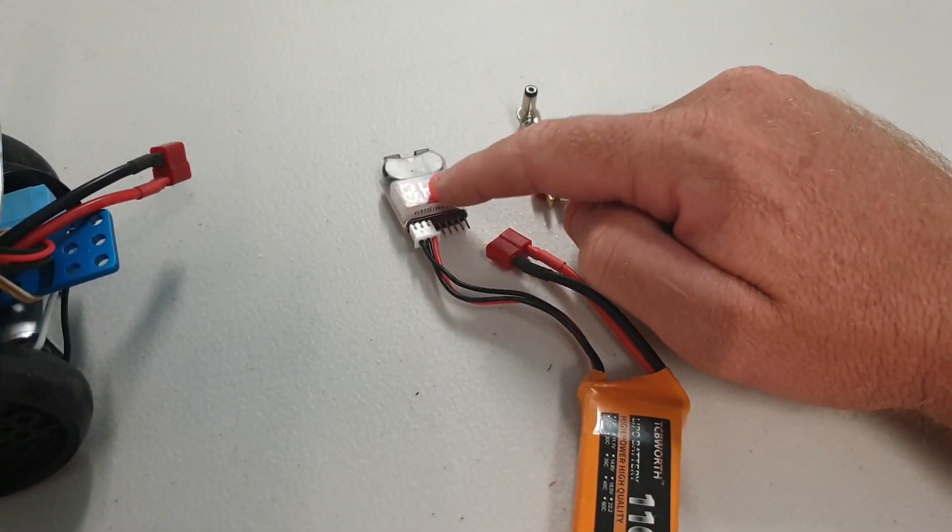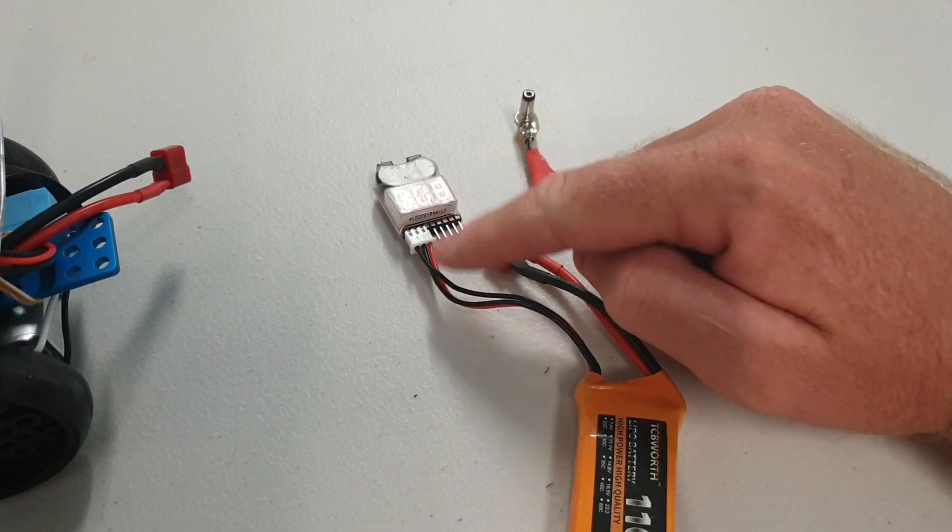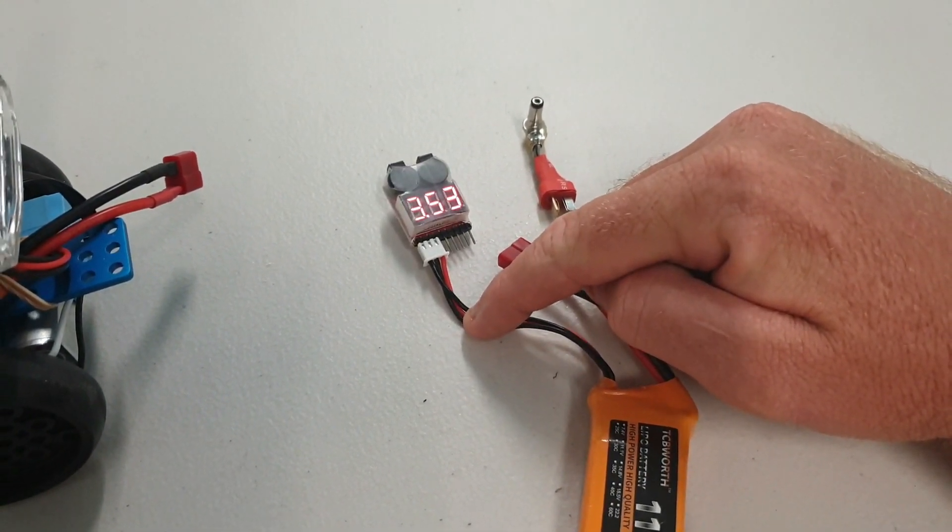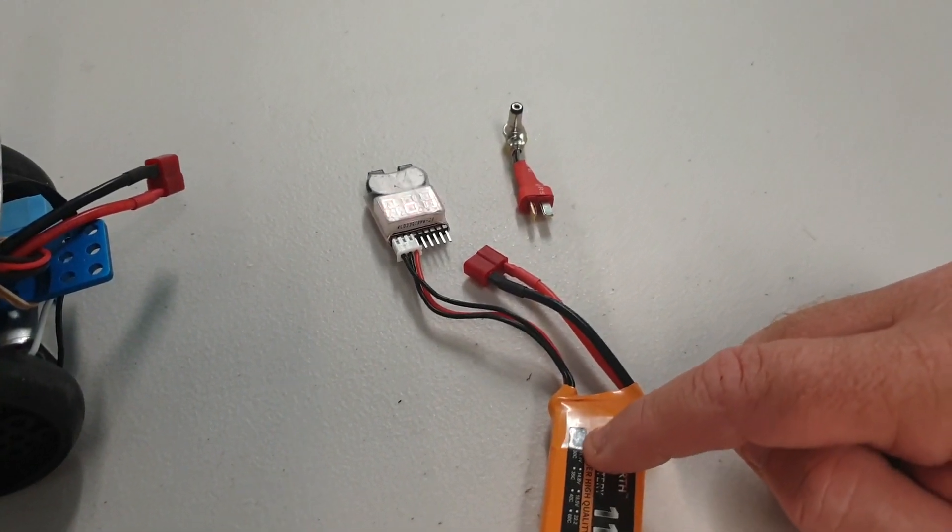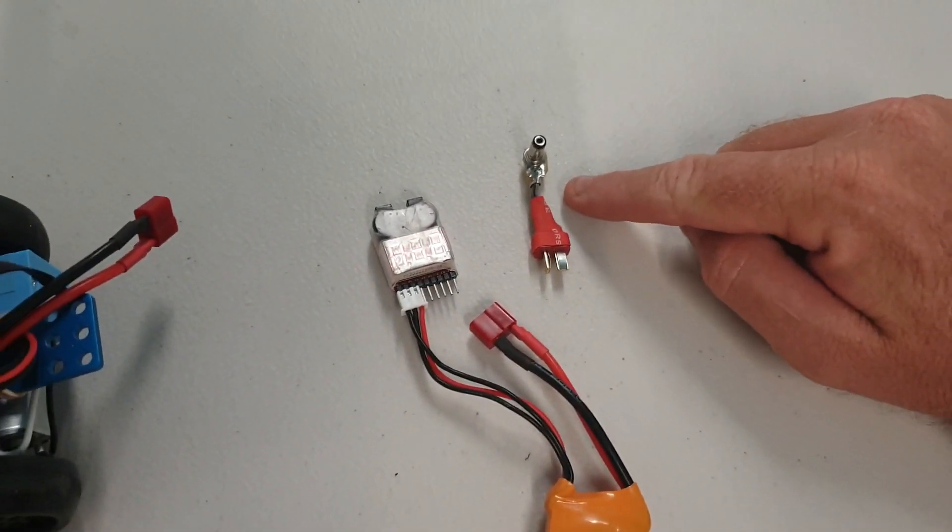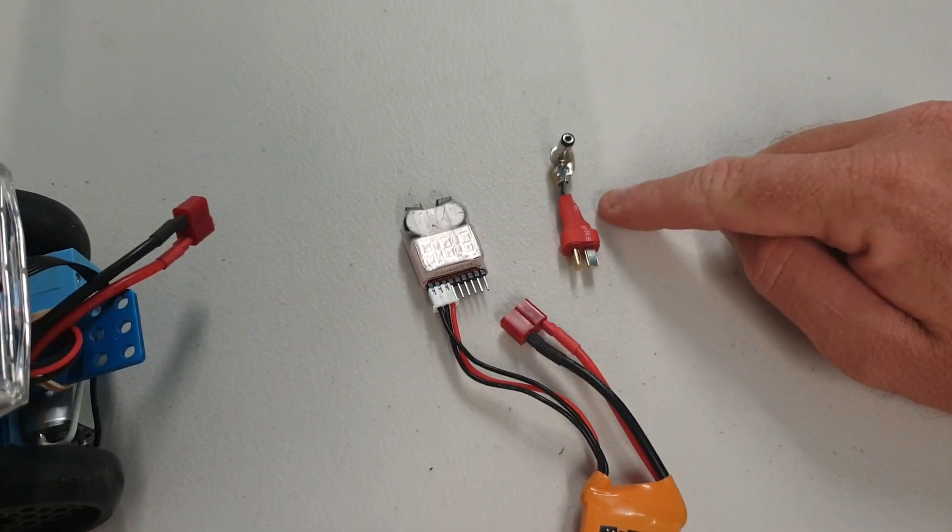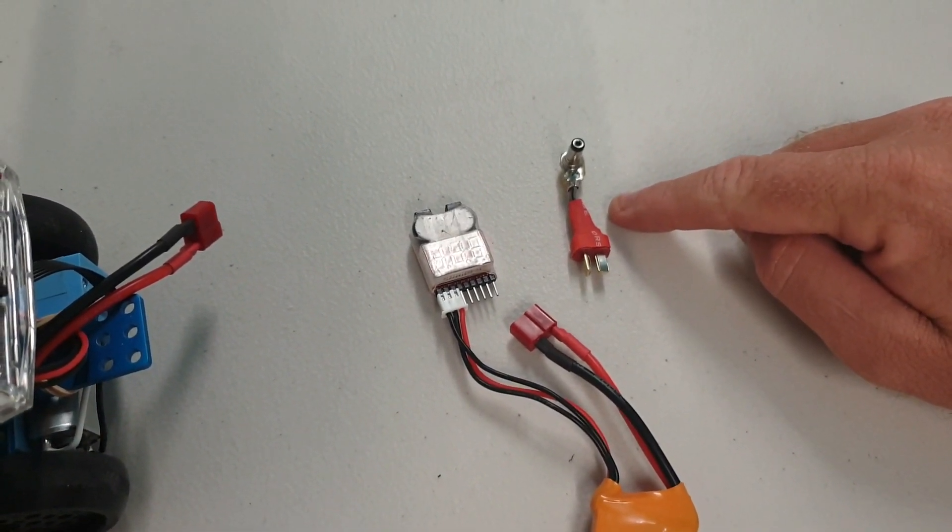So this is just your cheap two dollar off eBay battery monitor and it sounds an alarm when the battery's starting to get low. That tells you to stop and go and charge your batteries. And I just made up a little adapter myself, but you can also buy those off eBay.